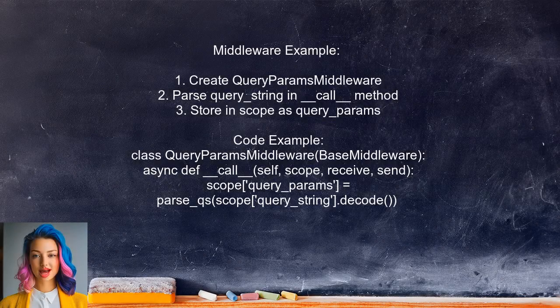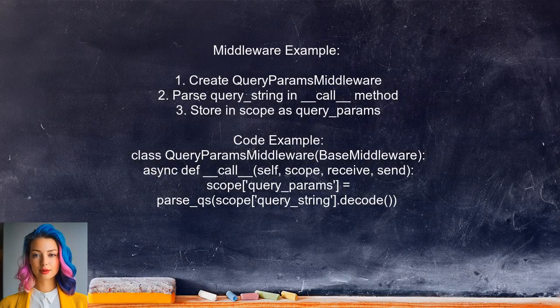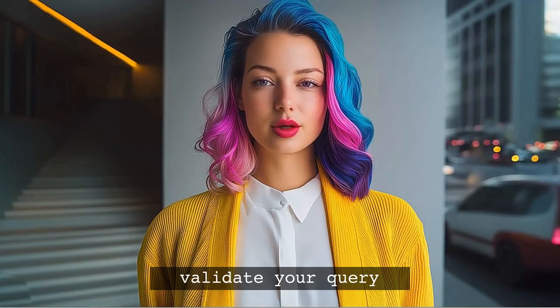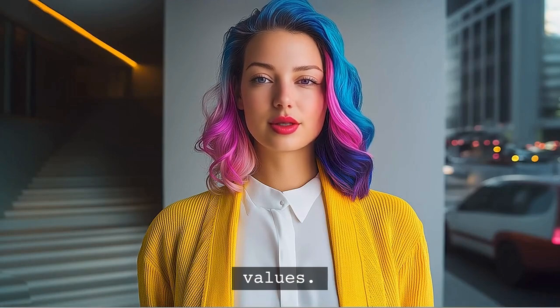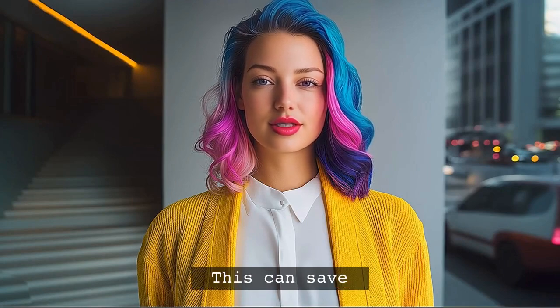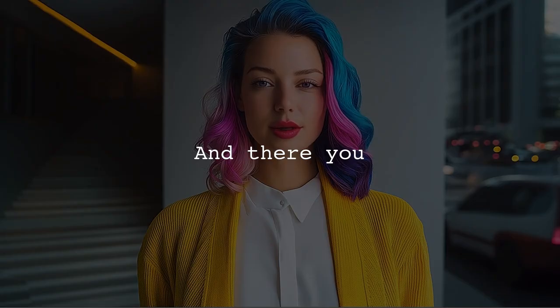If you find yourself needing to access query parameters frequently, consider creating a middleware. This middleware can wrap your ASGI application and automatically parse the query parameters for you. Here's that handy tip I promised: always validate your query parameters to ensure they contain the expected values — this can save you from unexpected errors down the line.